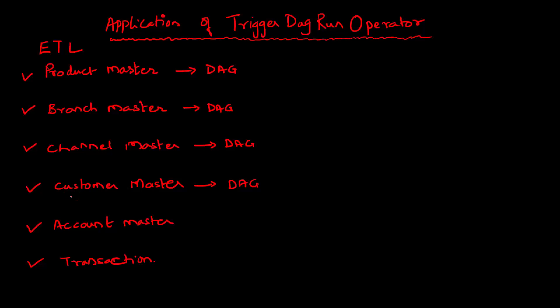However, the requirement would be that the customer DAG cannot execute before the completion of product, branch, and channel master. Likewise, the account DAG is dependent on customer, because an account exists only if there is a customer associated with it — and if you have primary key/foreign key relationships defined in your warehouse, then if account master executes before customer master it may give a foreign key error. So these are scenarios where you can clearly see there is a dependency of one DAG on another — a given DAG should not be executed before the completion of a dependent DAG.